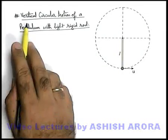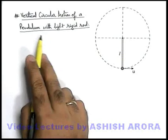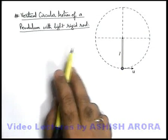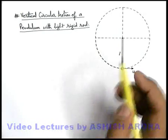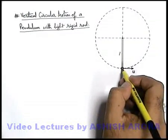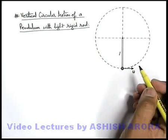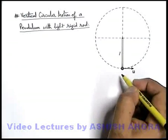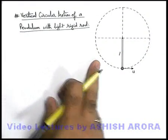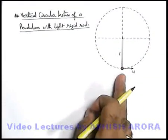Let us analyze the case of vertical circular motion of a pendulum with a light rigid rod. Till now we have studied a simple pendulum and the cases of vertical circular motion of its bob. In case of a simple pendulum we have used a string. Now we have changed the case slightly and replaced this string by a light vertical rigid rod.